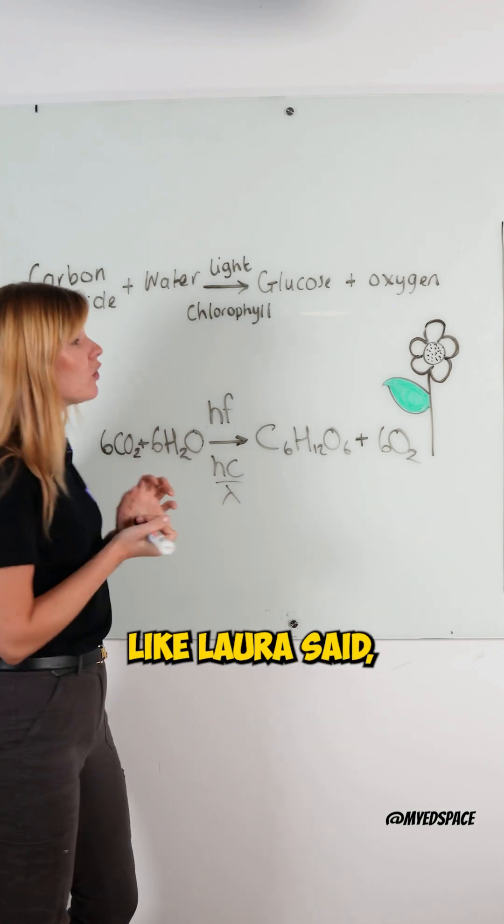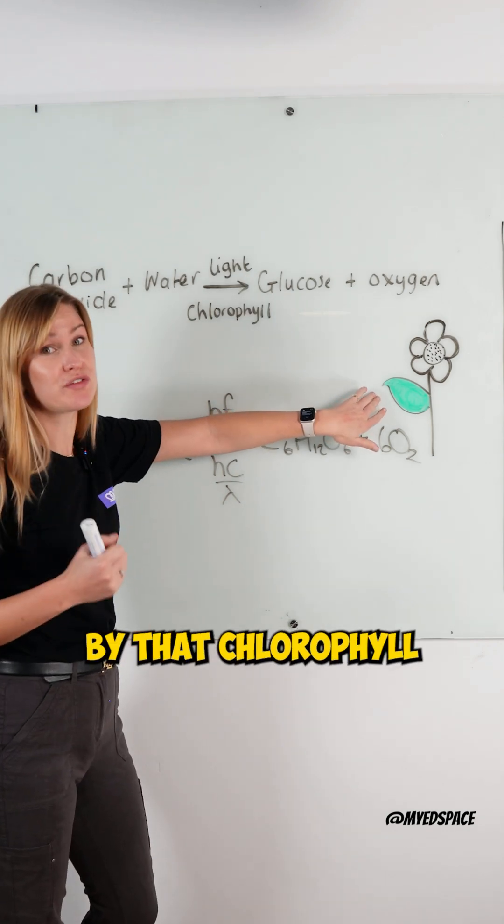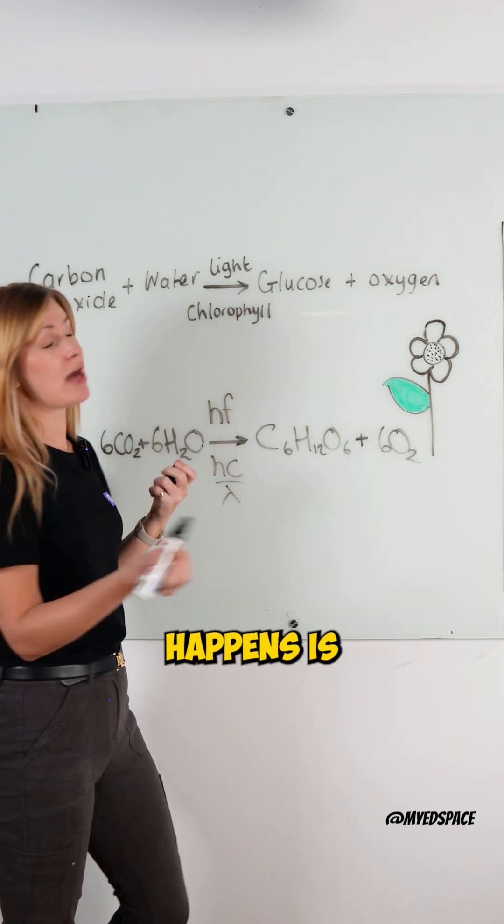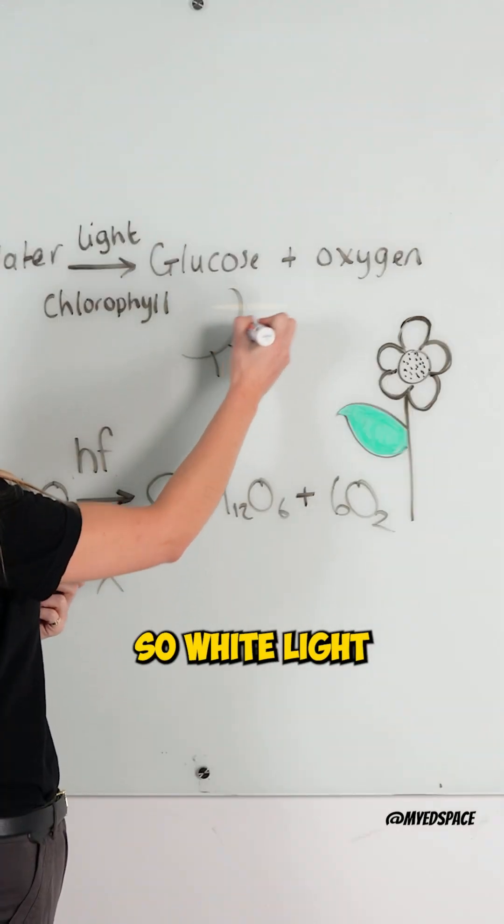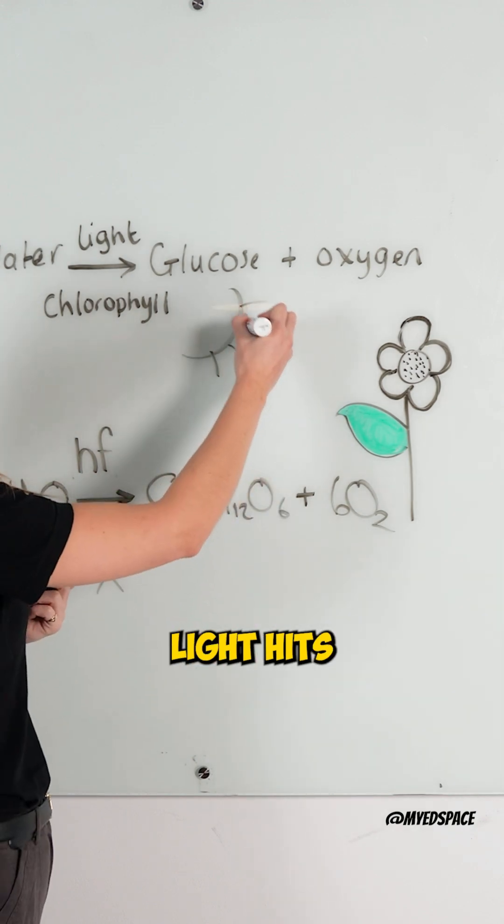So like we just said, or like Laura said, the light energy is going to get absorbed by that chlorophyll in the plant. So what actually happens is we have white light. So white light comes off the sun, and that white light hits our leaves.